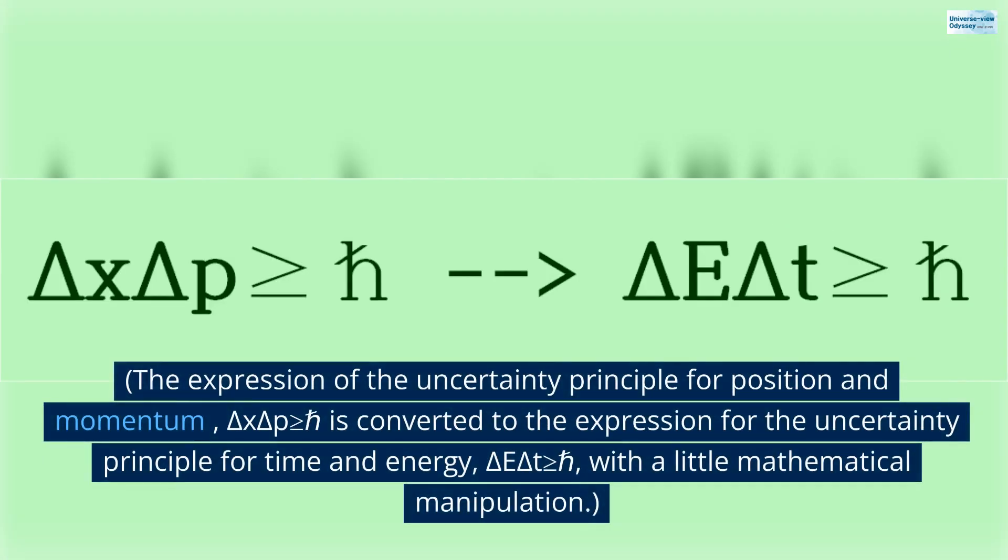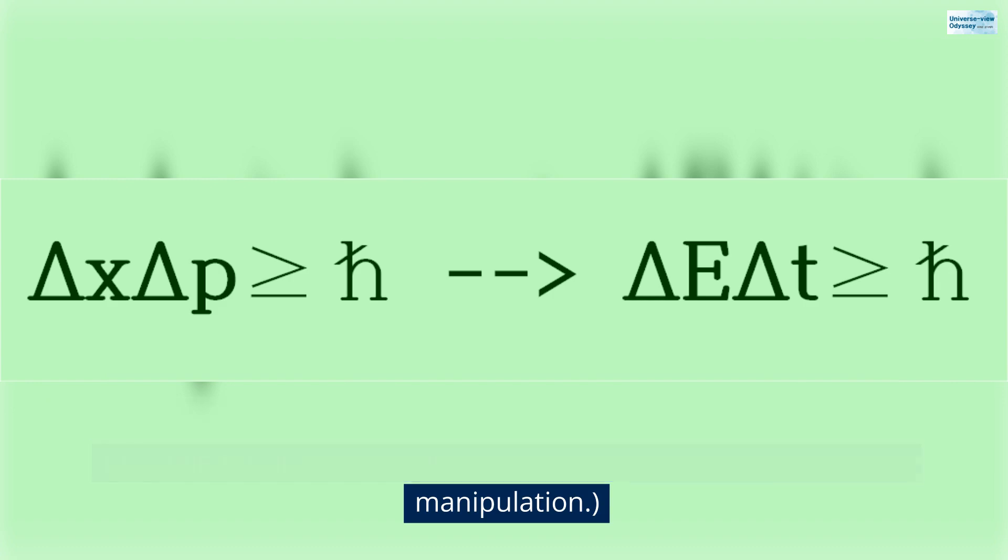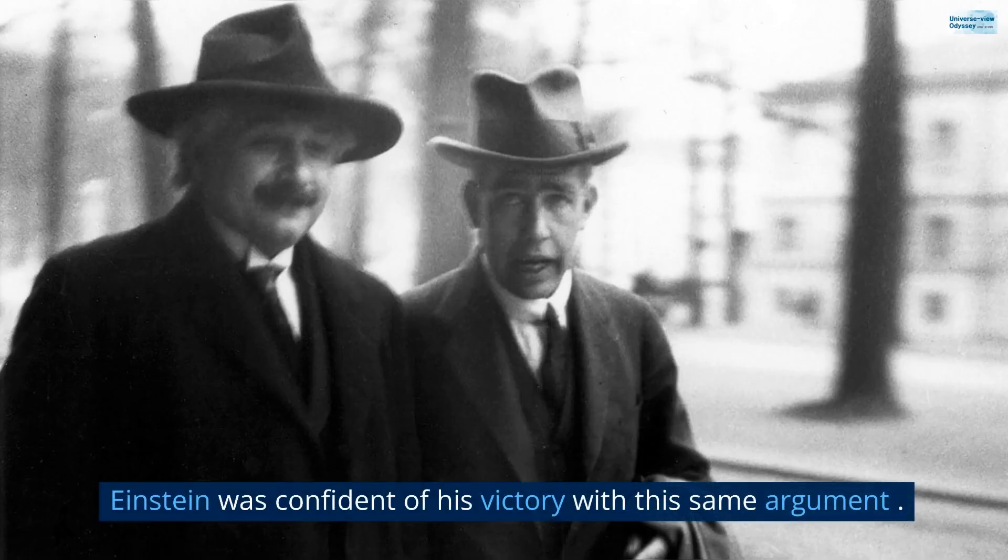The expression of the uncertainty principle for position and momentum, delta X delta P is greater than or equal to H, is converted to the expression for the uncertainty principle for time and energy, delta E delta T is greater than or equal to H, with a little mathematical manipulation. Einstein was confident of his victory with this same argument.